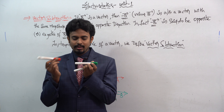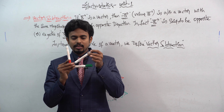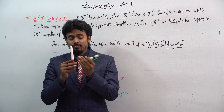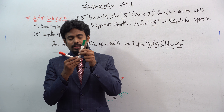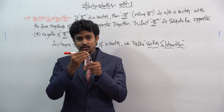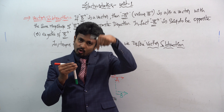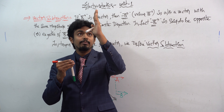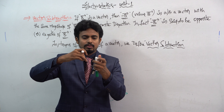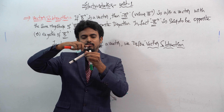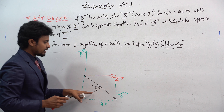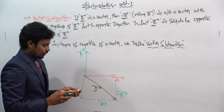In vector addition, you take vector a-bar and vector b-bar, and the resultant vector is like this. But in vector subtraction, if you take a-bar and b-bar, you also have to take the downside axis — the minus b-bar axis — and the resultant vector d-bar is like this.